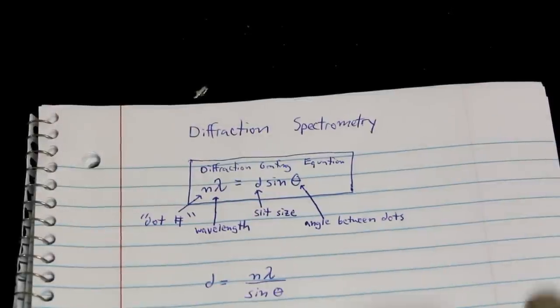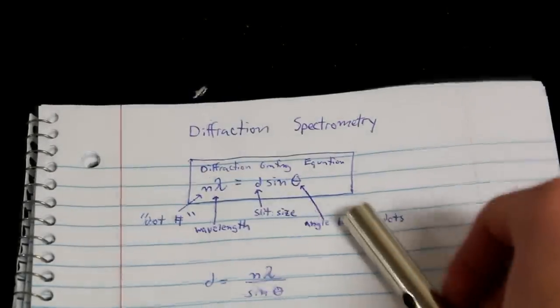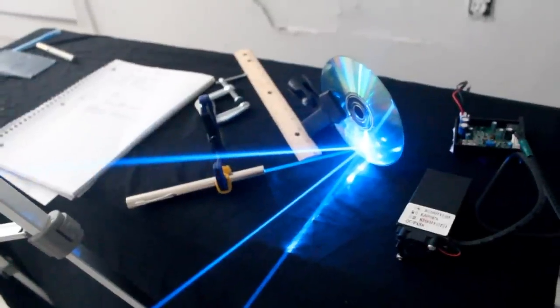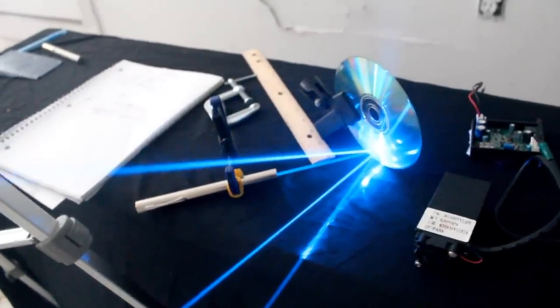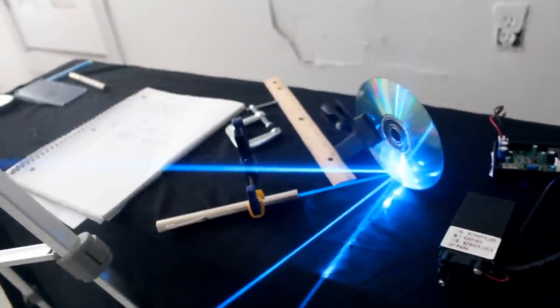So now that we know d in this equation, we can figure out the wavelength of this laser pointer here. So now for this blue laser pointer with the unknown wavelength, I do the same thing that I did with the green laser. I have it pointed at the CD there, and we're just going to take some measurements.